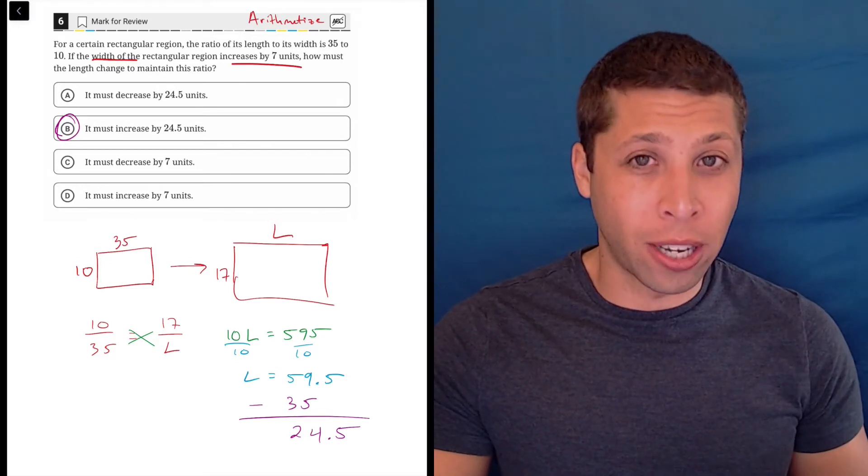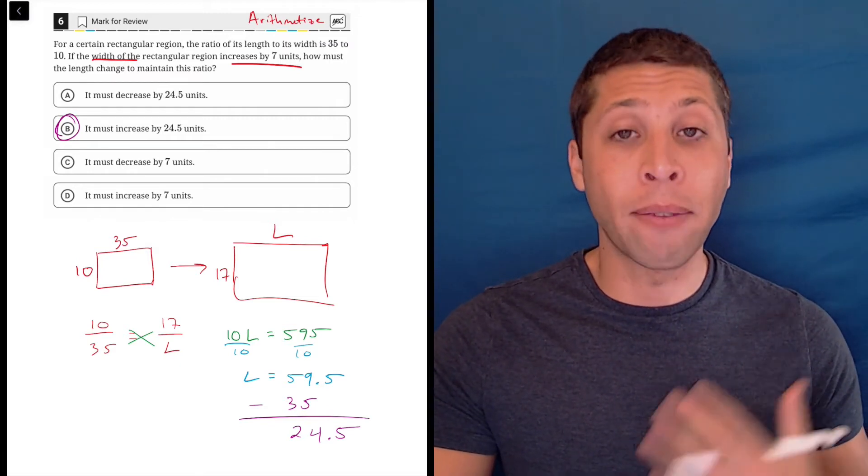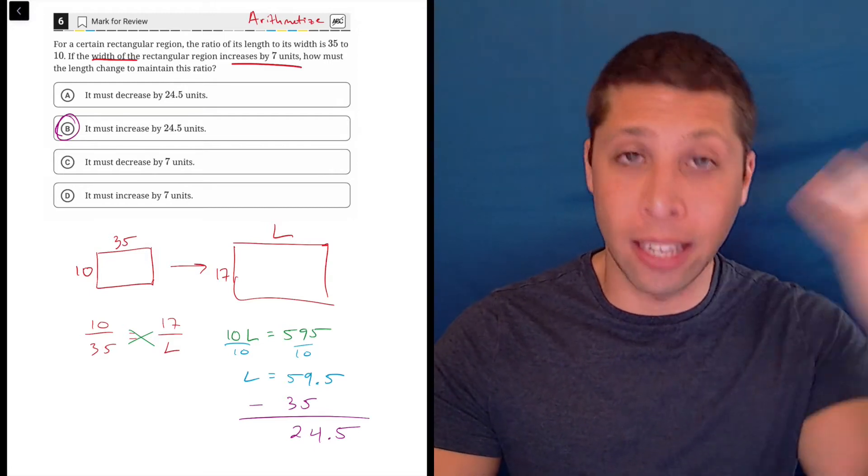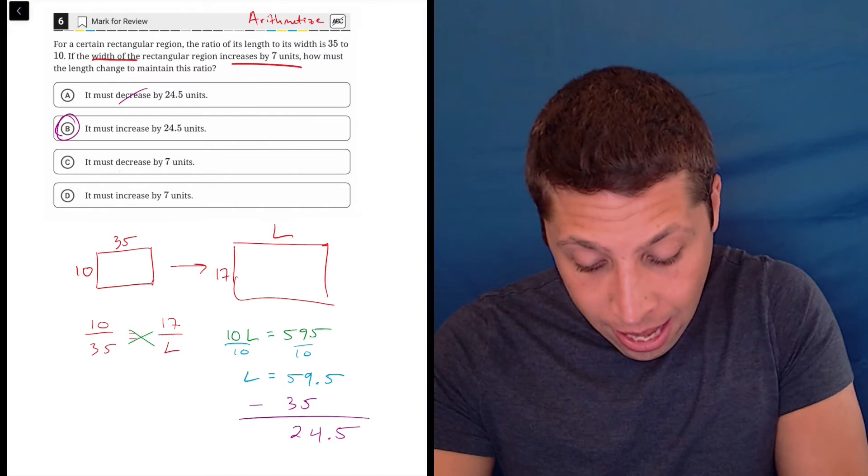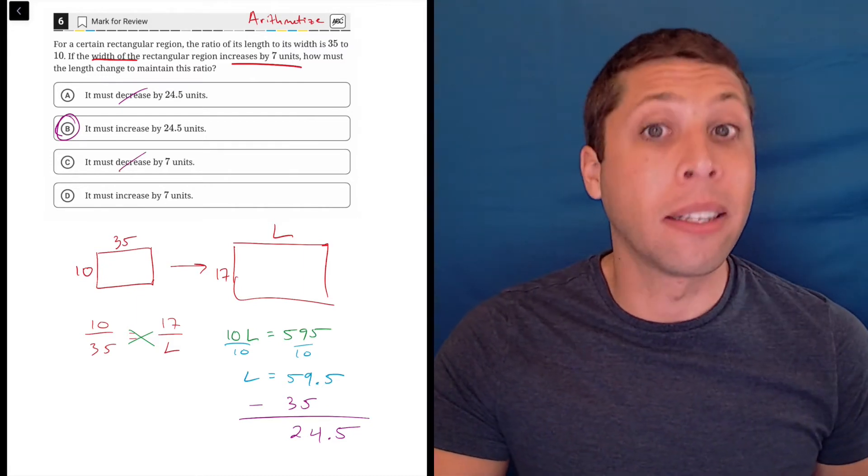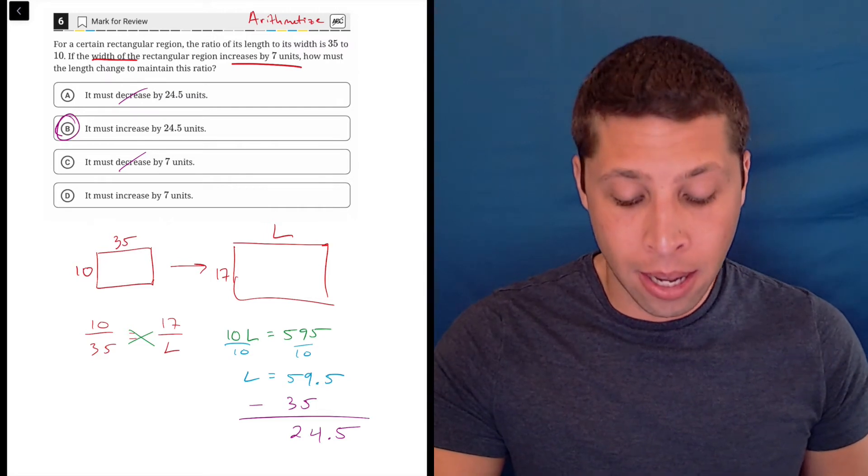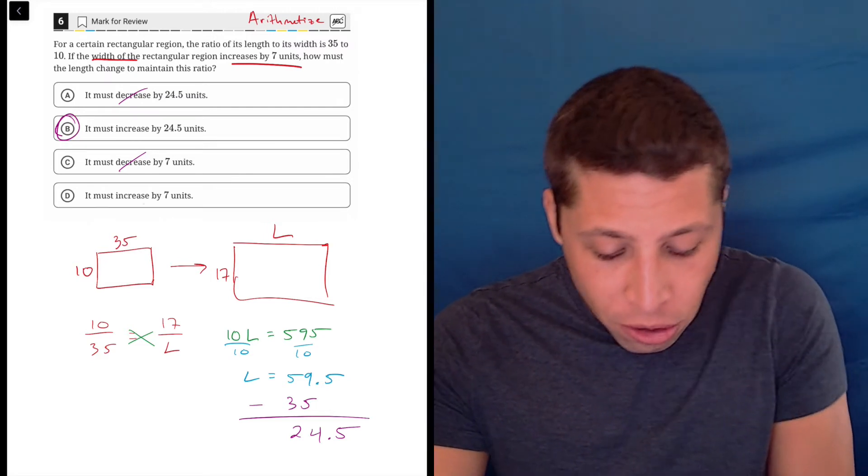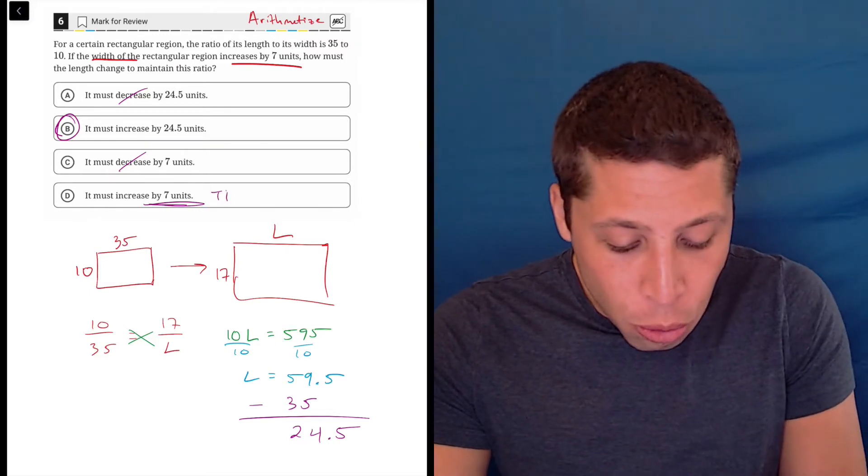When I read this question, I understand very quickly that I'm going to need an increase. If I have a ratio and I increase one thing, because of the consistency I need to increase the other thing as well. So I would have known that choices A and C are wrong because they involve a decrease. Right away, I would have been on a 50-50 shot. And then just looking at the numbers they gave me, there's no way that choice D was going to be right. It's way too easy.